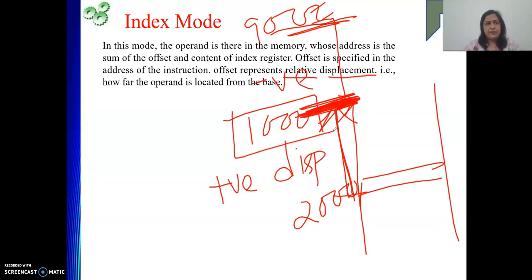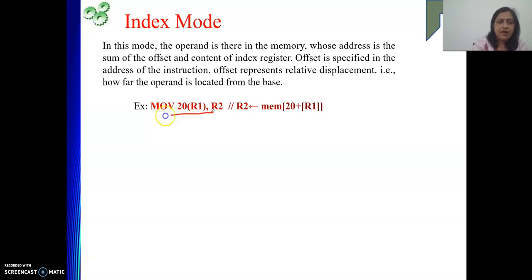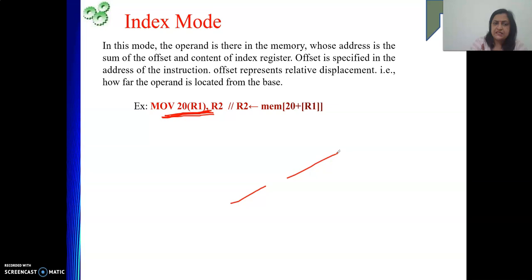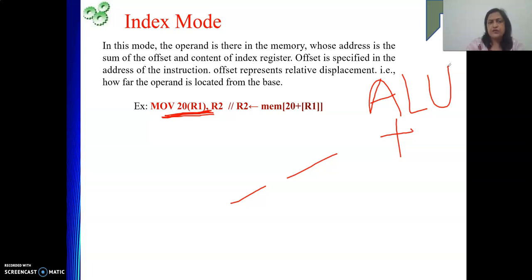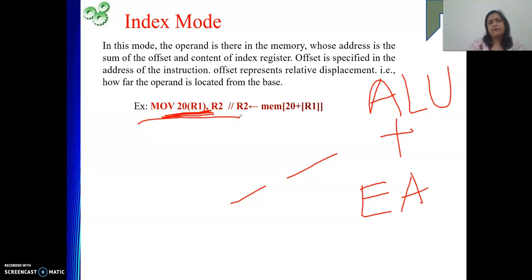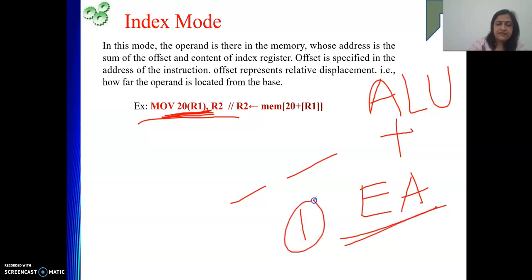We are using one general purpose register to hold the value of the index. In index mode, there are two parts: one is offset, another is your register. The register is in CPU, and the offset value — say 20 — is part of your IR. So to get the address of the operand, you only need to perform one addition operation, which the ALU does inside the CPU. The overall point is that to get the effective address of your operand, you need not go to memory — you can manage it within your CPU only. After getting the effective address, you need to go to memory to get the operand, so one memory reference is required.